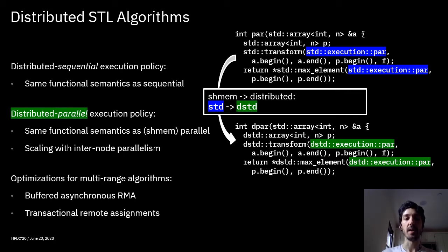In the same way, we introduce two policies for our distributed algorithms. One is the distributed sequential policy that provides the same functional semantics as a plain sequential execution. So given a distributed container, a distributed range, when you apply an algorithm with a distributed sequential policy, you get the very same result as a plain sequential execution. And for the operational semantics, this proceeds by splitting the range in multiple portions and going through the portions sequentially, carrying over the result from one portion to the computation over the next portion.